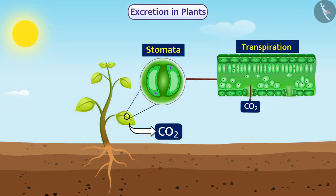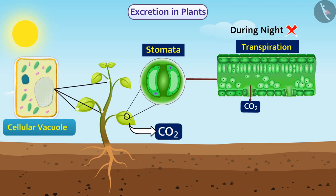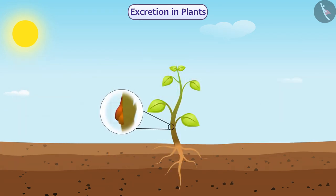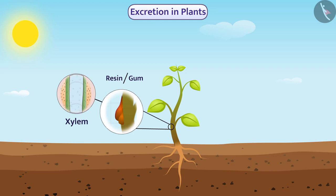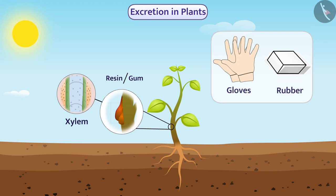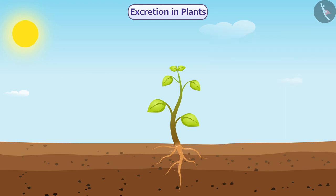In the process of transpiration, excess water is also removed by the stomata. During night, transpiration does not occur. Some waste products are stored in the cellular vacuoles of the bark of leaves and twigs, which get detached from the plant. Some waste products are stored in old xylem in the form of resin and gum, which are very useful to humans. The roots of the plant also remove some waste products into the surrounding soil through diffusion.